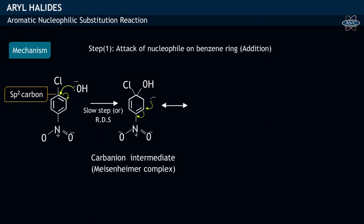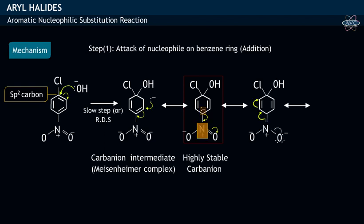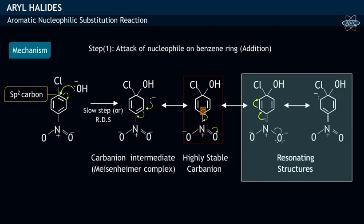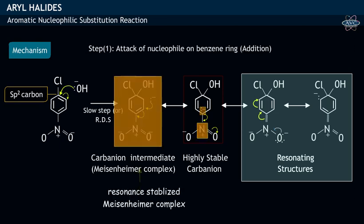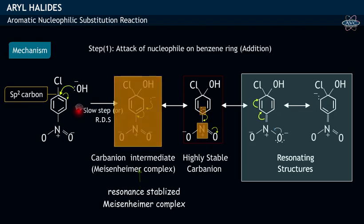As a result, a highly stable resonating structure with negative charge on carbon and positive charge on the nitrogen of the nitro group is formed. Further, resonance into the nitro group gives two more resonating structures. The formation of this resonance stabilized Meisenheimer complex is the slow or rate determining step.